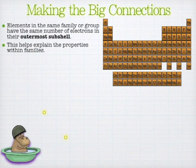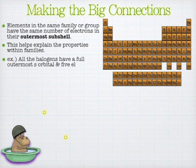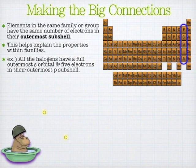One of the things you'll see is that the number of outermost electrons explains a lot of the family properties. For instance, all the halogens have two electrons in the outermost S orbital and five electrons in the outermost P subshell.